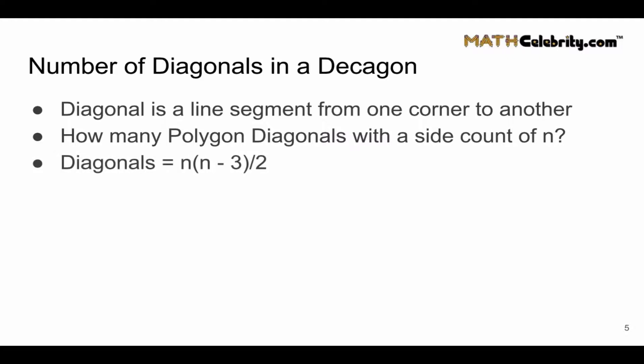The polygon diagonal formula count is n times n minus 3 divided by 2, where n is the number of sides. With a Decagon having 10 sides, this simplifies to 10 times 10 minus 3 divided by 2.